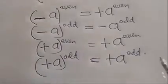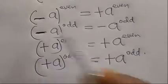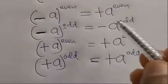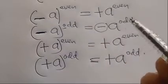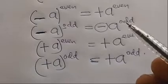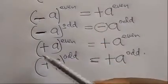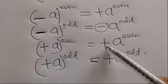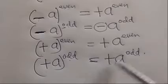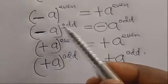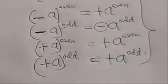To summarize the sign rules: negative raised to even gives positive; positive raised to even gives positive; positive raised to odd gives positive. But negative raised to odd gives negative. Please take note — this is very important.